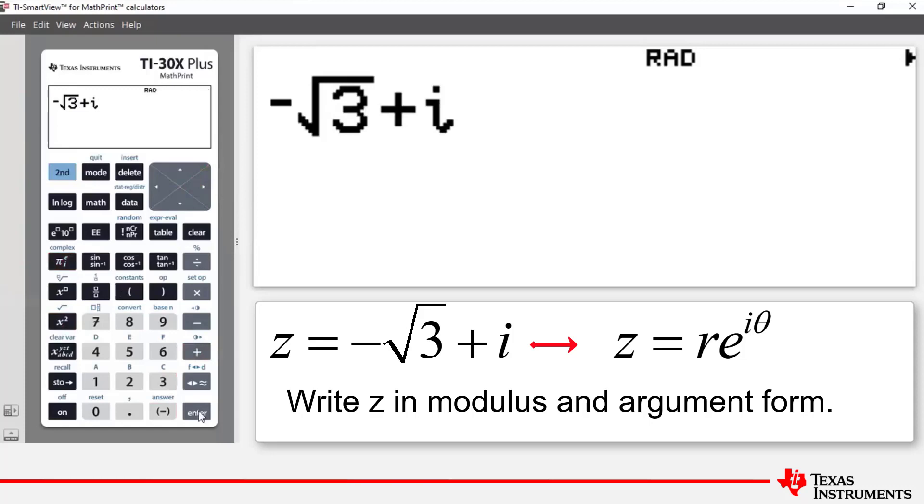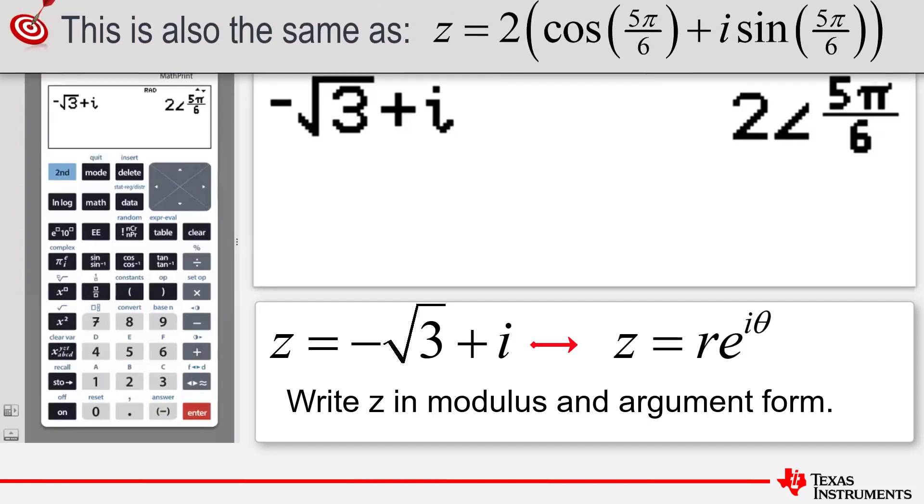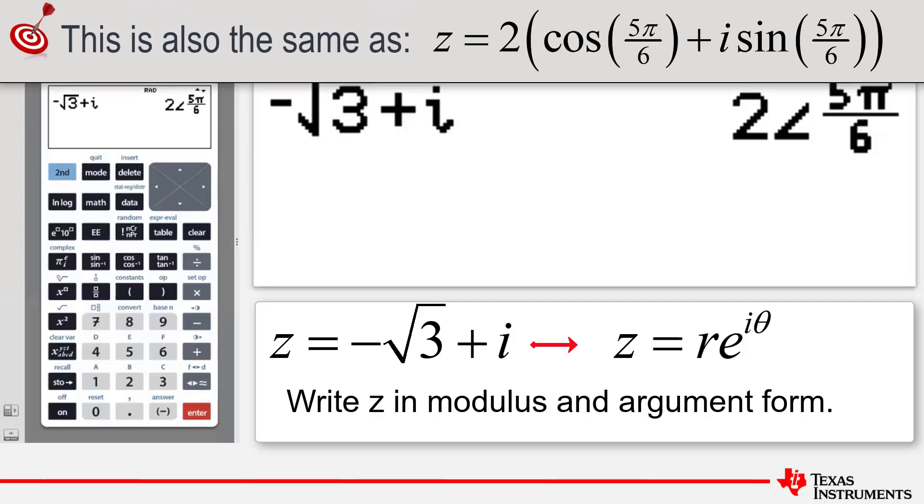And we press enter and notice that the conversion has happened automatically for us. And so reading this negative root 3 plus i is equal to 2e to the 5 pi i all over 6.